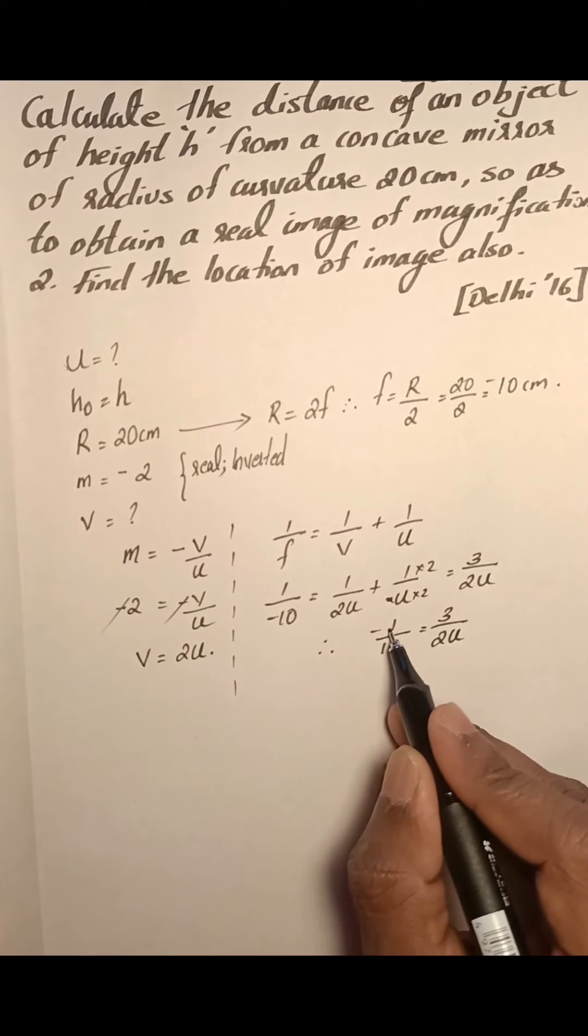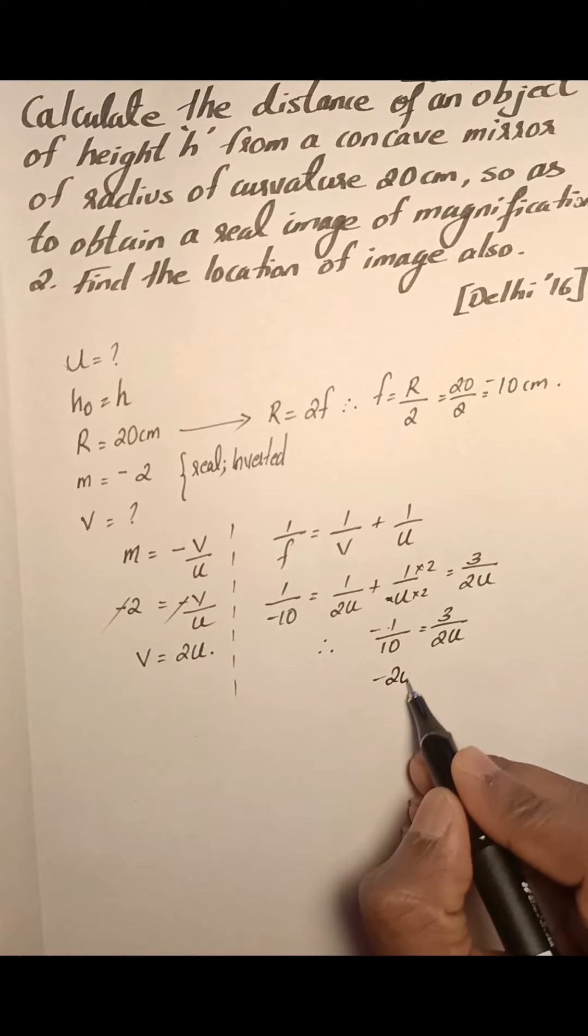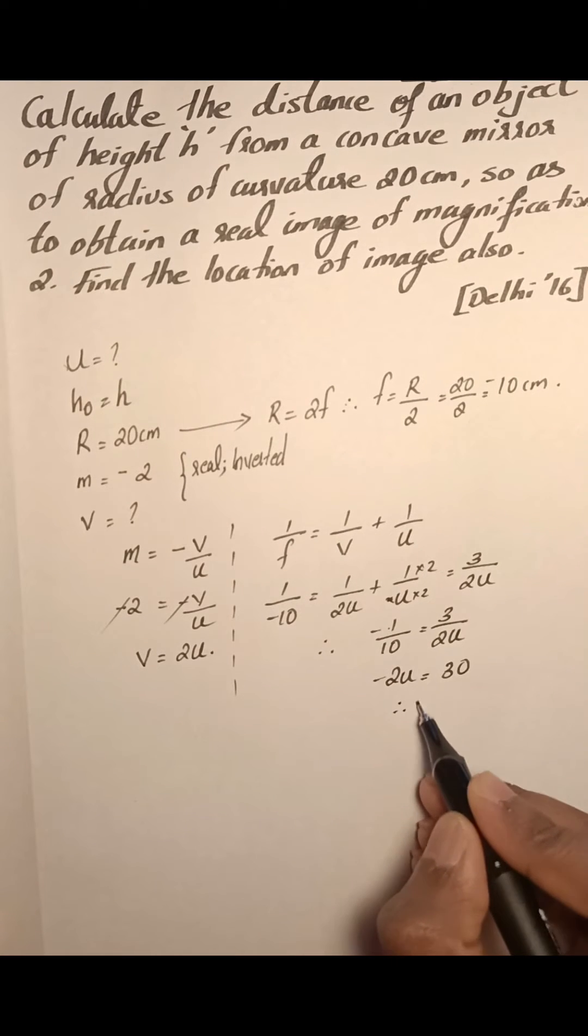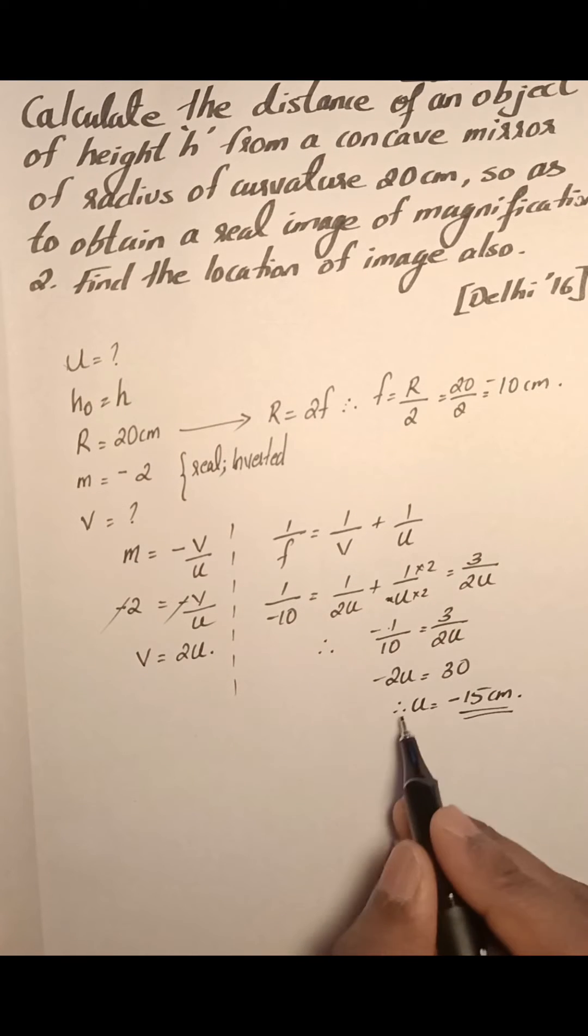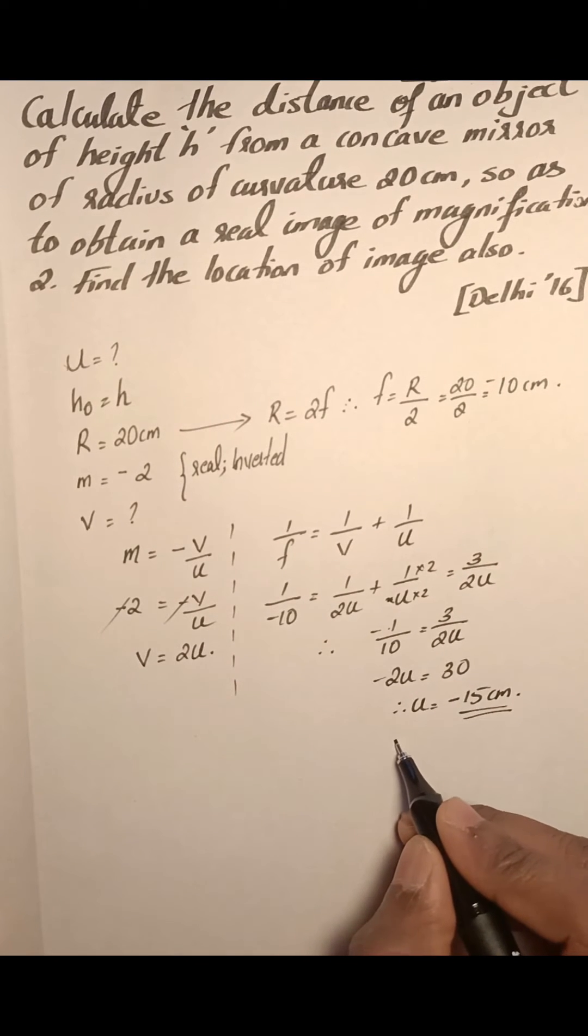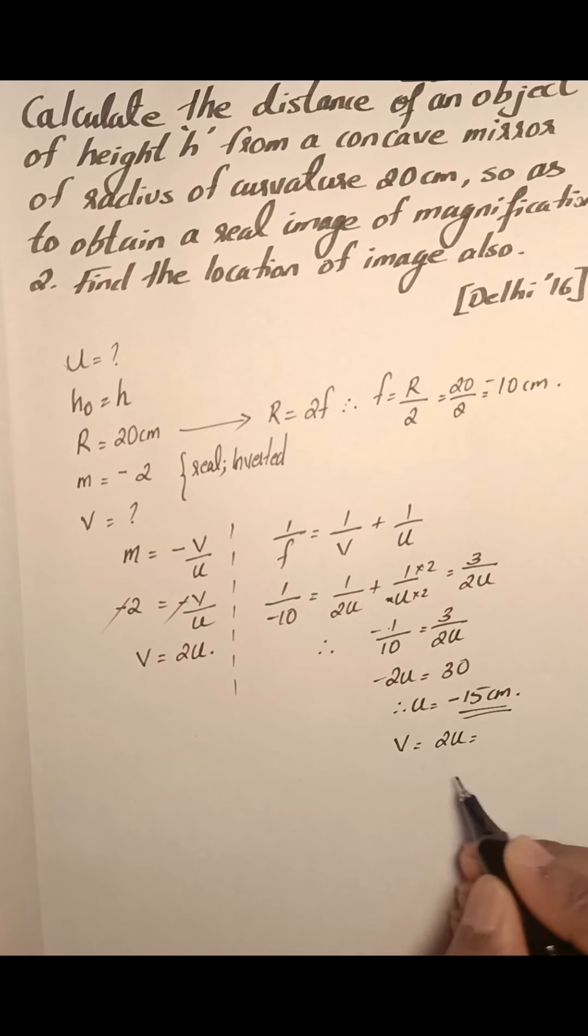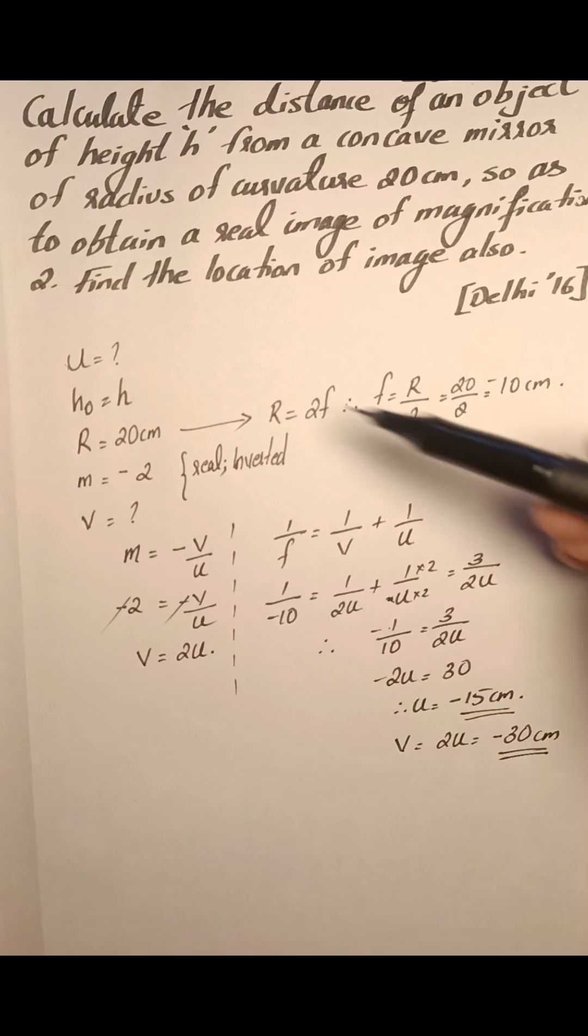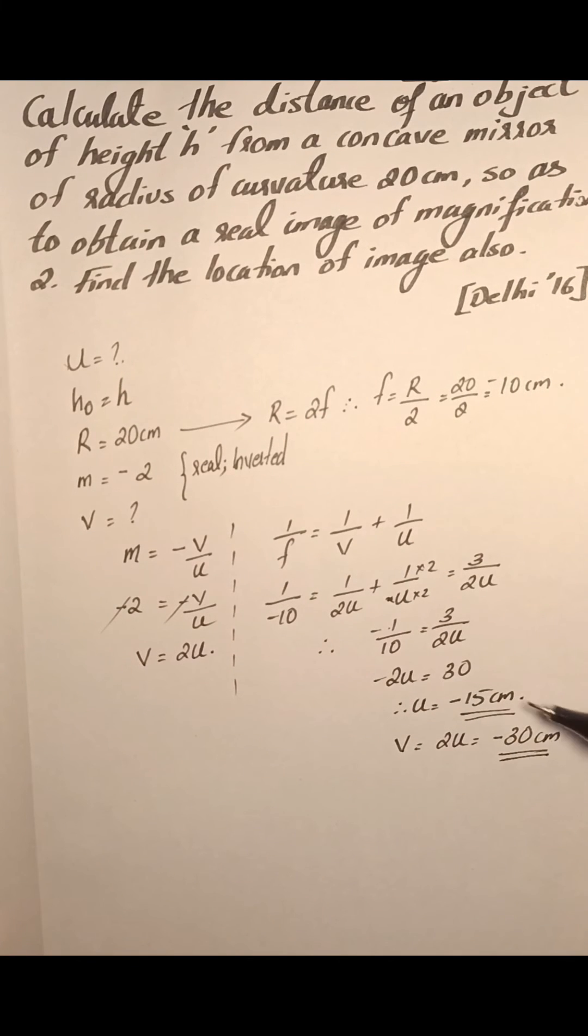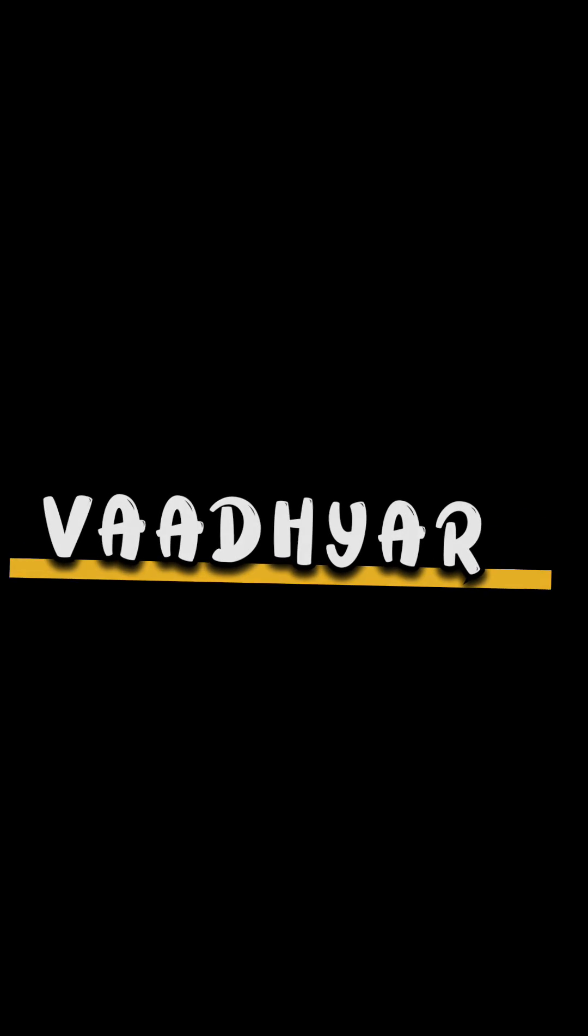We will cross multiply these values. Minus 1 times 2u is minus 2u equals 3 times 10 is 30. Therefore, u equals minus 15 centimeters. We already got the relation between v and u. Therefore, v equals 2 times u equals 2 times minus 15 is minus 30 centimeters. So the question was to find out object distance and image distance. We got both the values. Thank you.